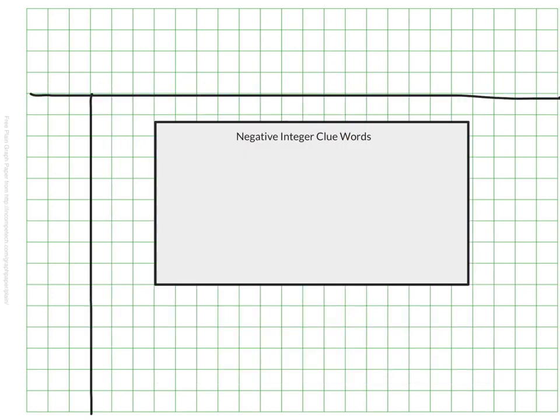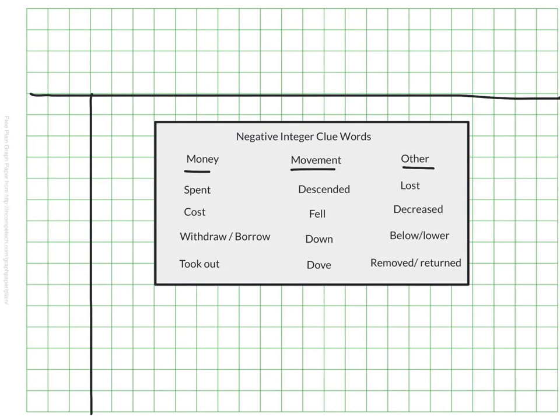And of course, since we've identified some positive clue words, we're going to also identify some negative clue words. And I'll use the same three categories: money, movement, and other. Money terms might be things like spent or it cost something or you borrowed or withdrew something or you took out something. Movement terms might include descended, fell, went down, dove. And maybe in other, we'd have things like lost or decreased or went below, like below sea level or lower. And of course, if you can think of some more, you can make a little line here. Anything else that you can think of that you could share with us tomorrow to kind of build our list would be great.